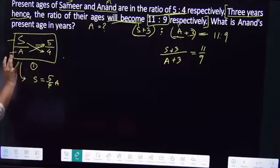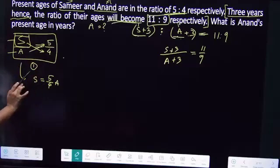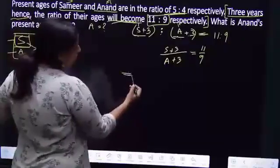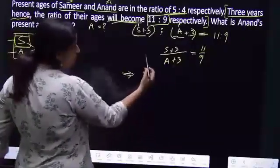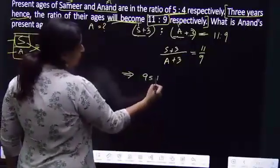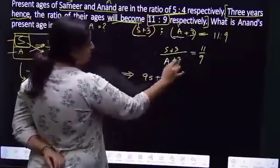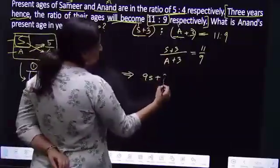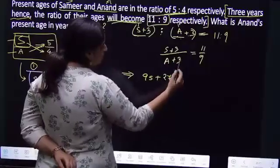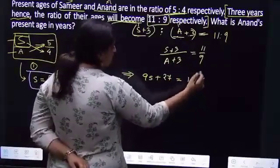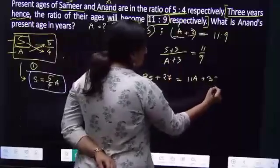Cross multiply. S to one side, A to one side — S is equal to 5 by 4 A. Cross multiply the second equation: 9 into S plus 3 gives 9S plus 27. 11 into A plus 3 gives 11A plus 33.